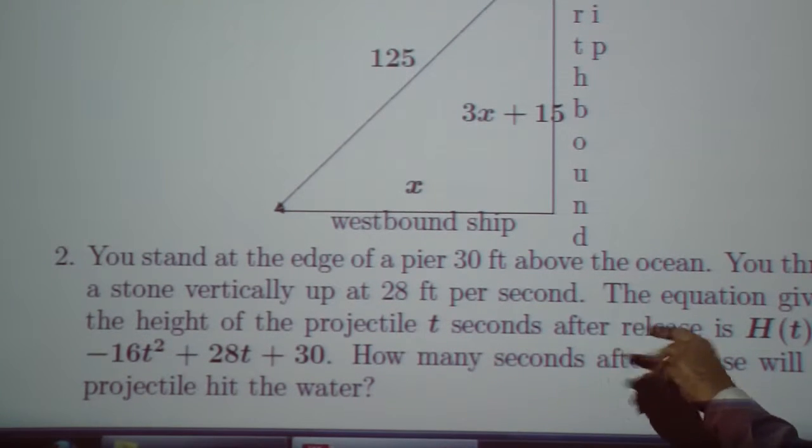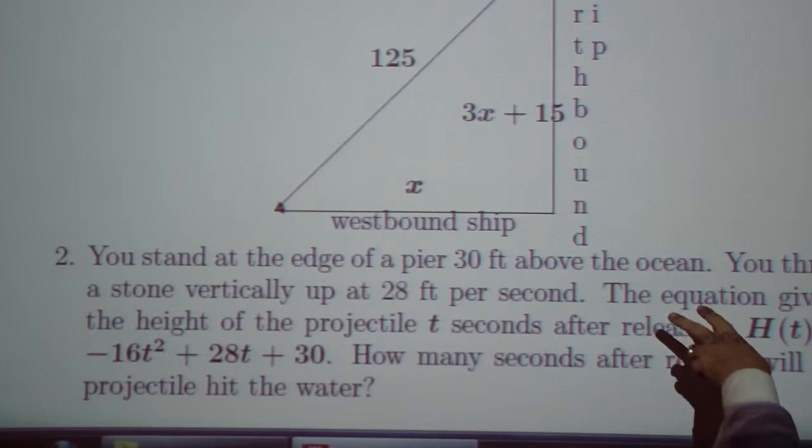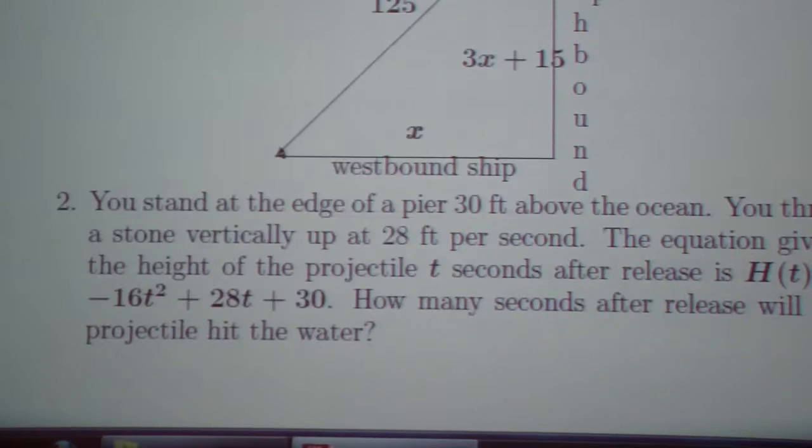You stand at the edge of a pier 30 feet above the ocean. You throw a stone vertically up at 28 feet per second. The equation giving the height of the projectile is t seconds after release. So, h of t is negative 16t squared plus 28t plus 30. How many seconds after release will the projectile hit the water?